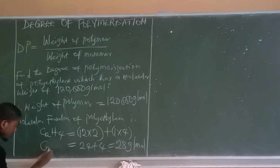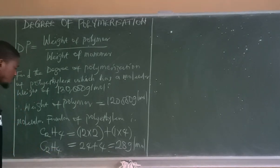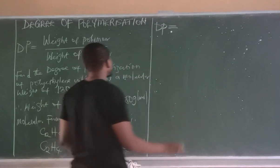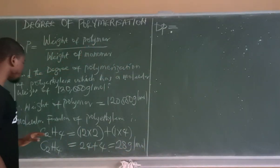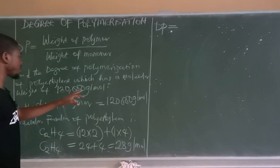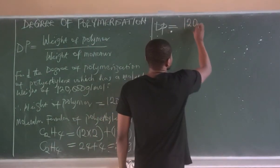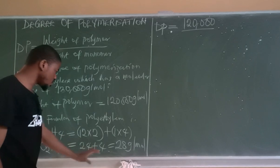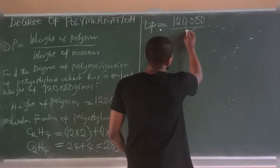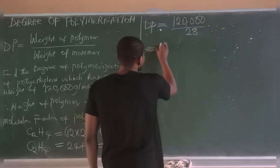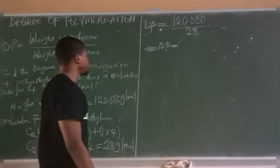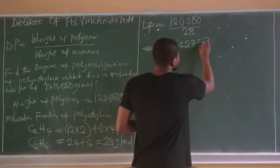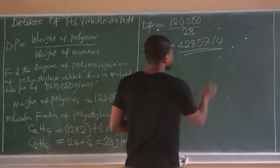So 28 grams per mole is the molar weight of the monomer. From the formula, degree of polymerization D.P. equals the molecular weight of the polymer — 120,000 grams per mole — divided by the molecular weight of the monomer, which is 28. This gives us 120,000 ÷ 28 = 4,285.7, so the degree of polymerization is approximately 4,285.7.